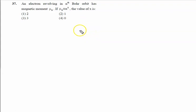Electron revolving in the nth Bohr orbit has magnetic moment μn. μn is proportional to n raised to the power x. We need to find the value of x.